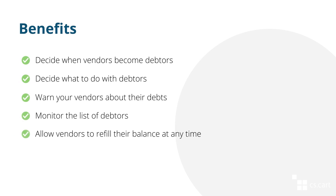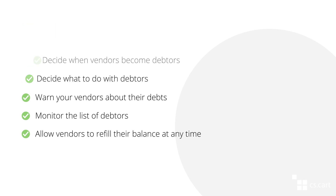Multi-vendor has a functionality called vendor-to-admin payments. It allows you to collect payments from vendors and work with debtors automatically. Here are the main benefits of this functionality. You can decide when vendors become debtors and what to do with them. You can also warn your vendors about their debts and monitor the list of your debtors. You can allow vendors to refill their balance at any time to help them avoid becoming debtors.